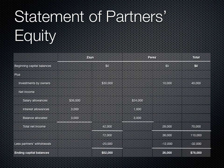This slide shows us the statement of partner's equity after the first year of business. It tells us that income exceeded allowances by $6,000, that Zane withdrew $20,000 of capital from the business prior to the reporting period, and Perez withdrew $12,000. The ending equity value of the company is $78,000.